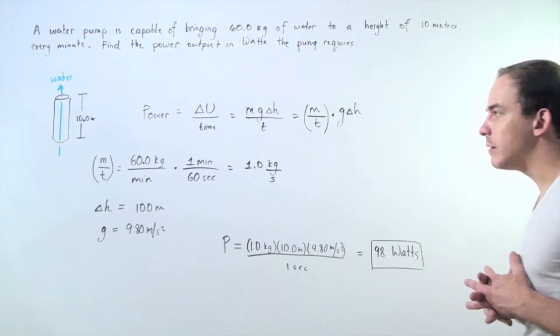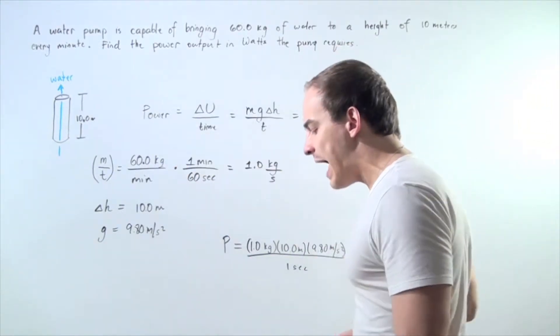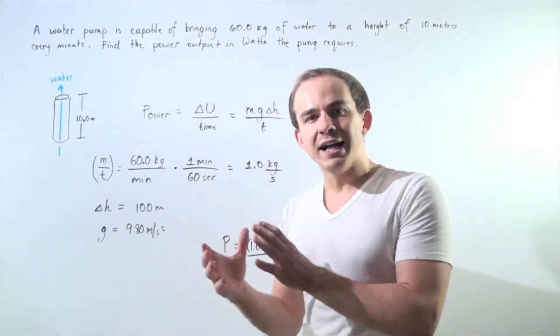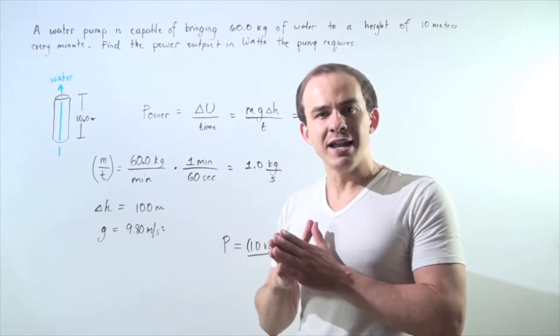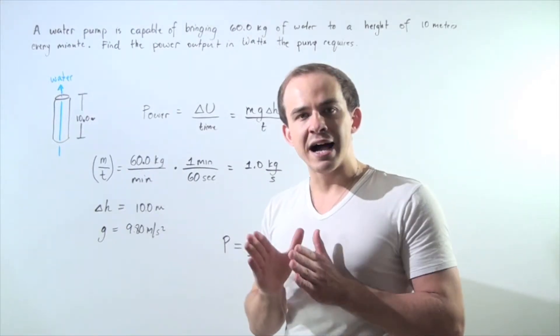What exactly is the power formula? Well, the equation for power is simply we find the change in our energy and divide that by the time.